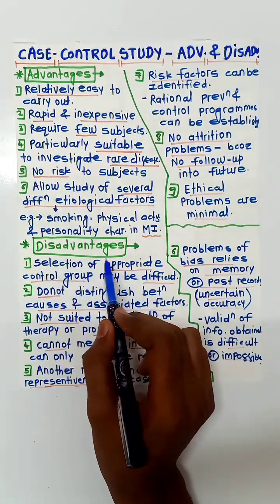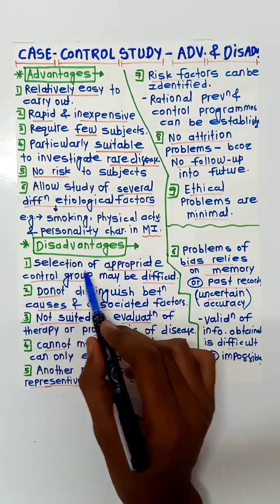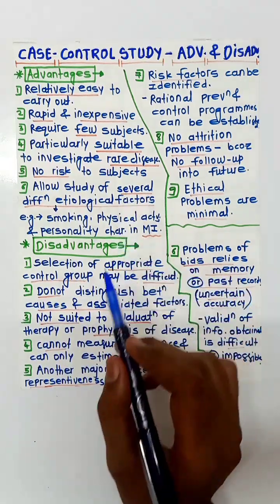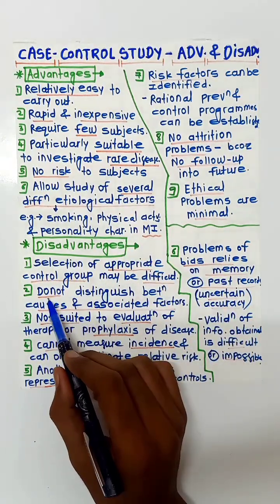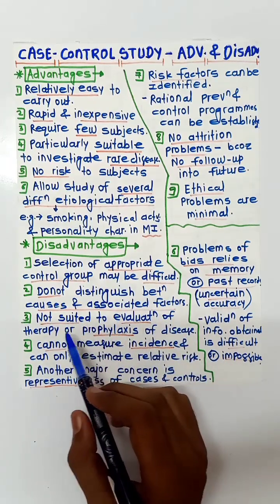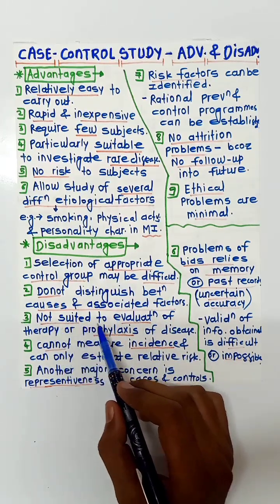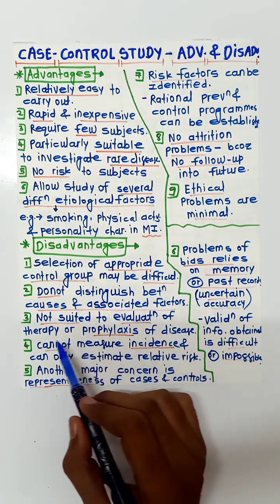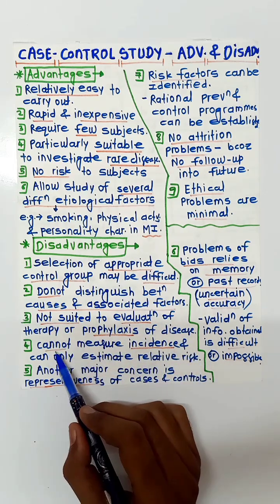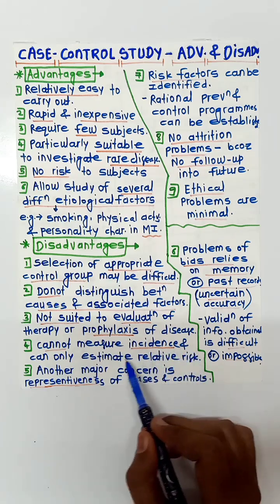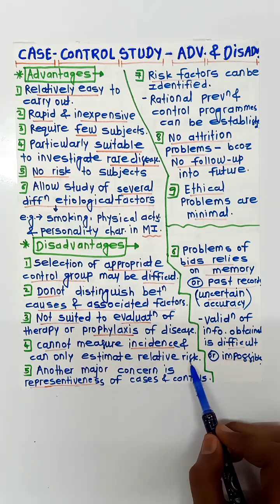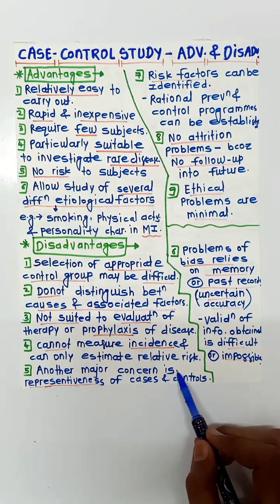First of all, selection of an appropriate control group may be difficult in this study, and it does not distinguish between causes and associated factors. It is not suited to evaluation of therapy or prophylaxis of the disease. It cannot measure the incidence and can only estimate the relative risk.